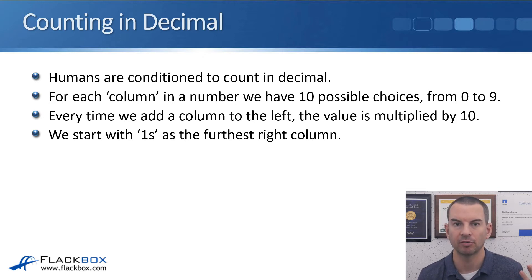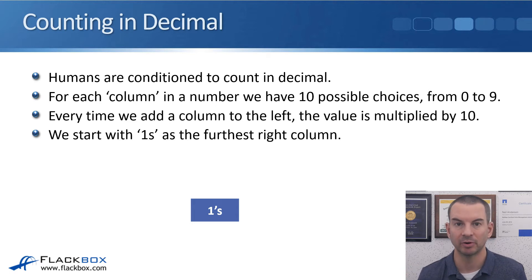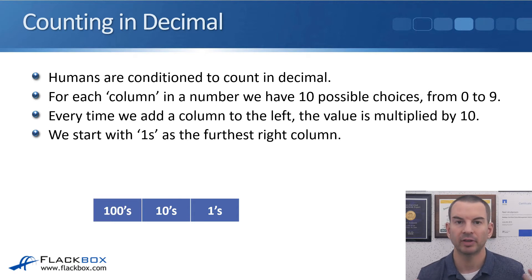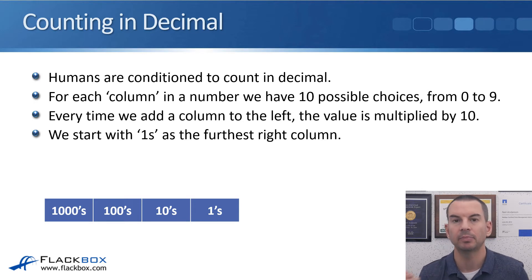We start with 1s as the furthest right column. So starting from the right-hand side of the number, we've got the 1s, the next column is the 10s, then we've got the 100s, then the 1,000s, then the 10,000s, and so on. You can see it's being multiplied by 10 each time we add a column to the left.